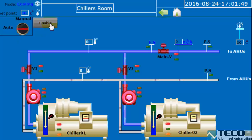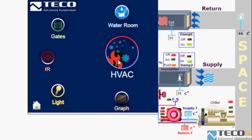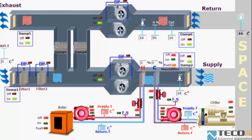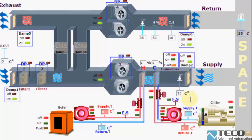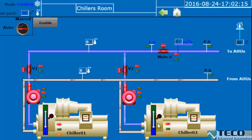Before that, we should set a set point that is less than the space temperature. Let's go to HVAC and set the set point — I will keep it at 16, but I will change the space temperature to 35. Now we go to the chillers room, where the space temperature is 35 and the main set point is 16.